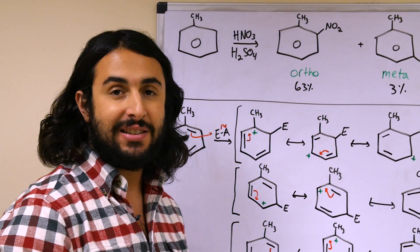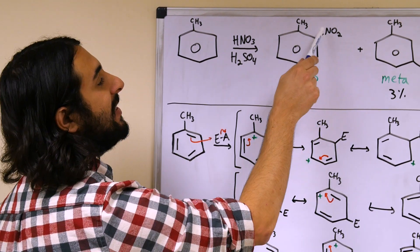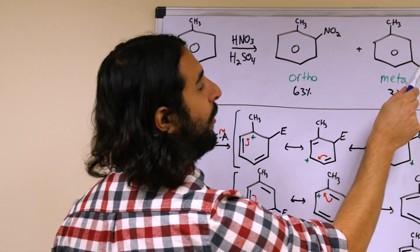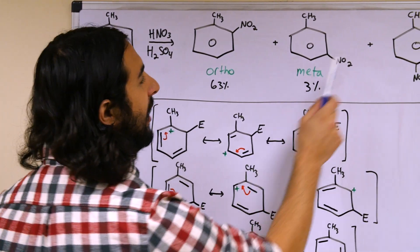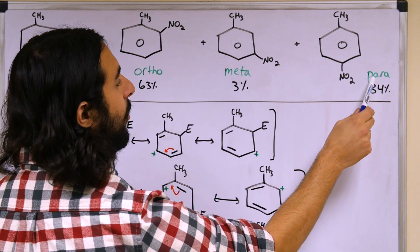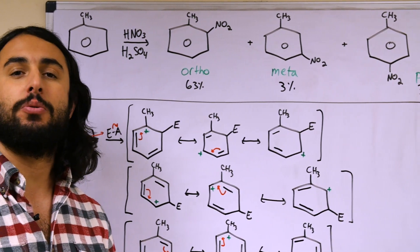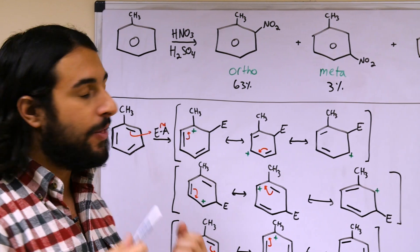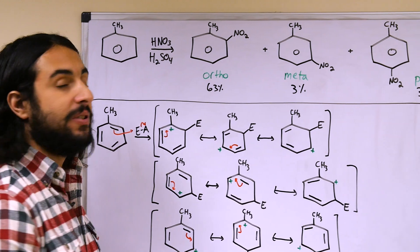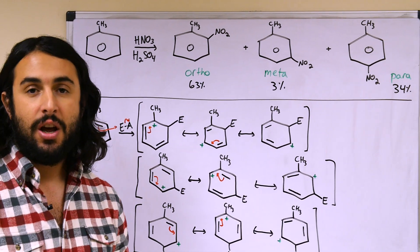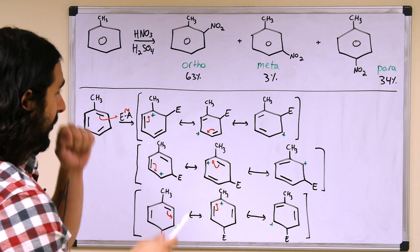We need to understand the terminology for the different possibilities. If the two groups are adjacent, that is called an ortho configuration. If the nitro is one carbon further over, we call that meta. And if they are on opposite sides of the ring, we call that para. We have to know those three words and understand what they mean — they describe the spatial relationship between the two groups on the ring.